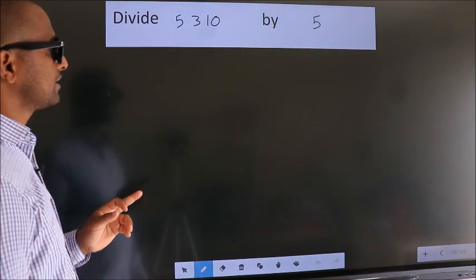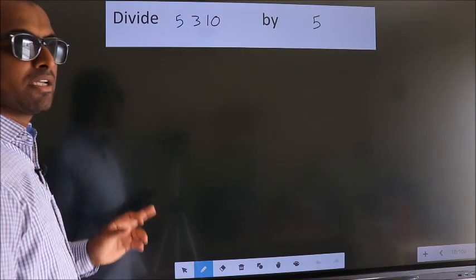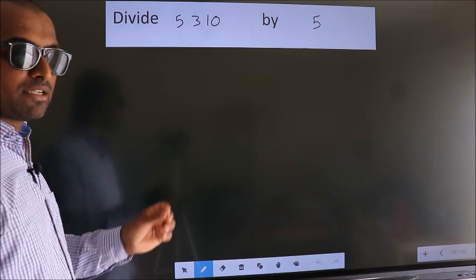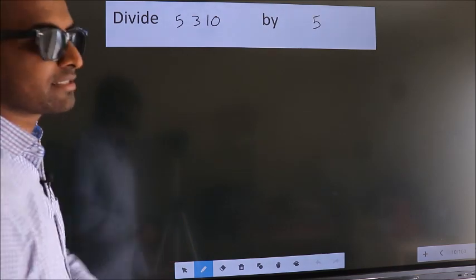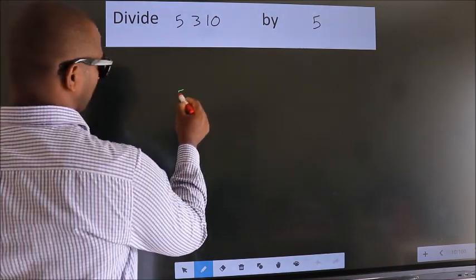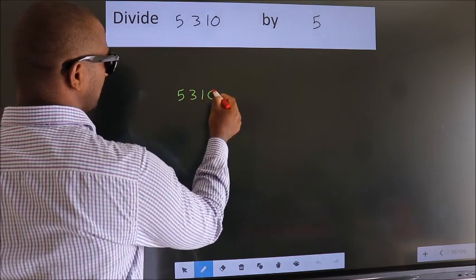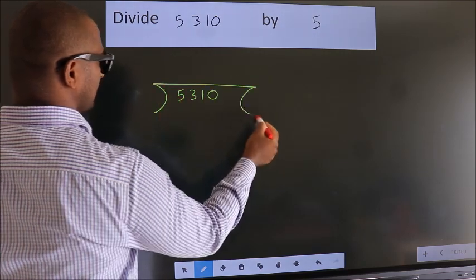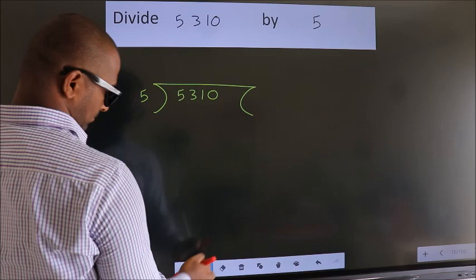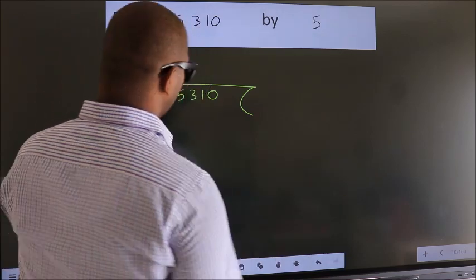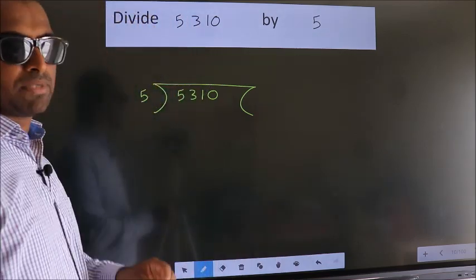Divide 5310 by 5. To do this division, we should frame it in this way: 5310 here, 5 here. This is your step 1.